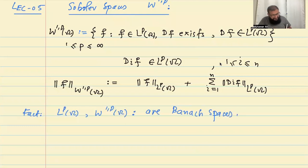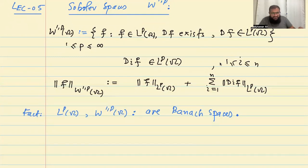These spaces — Lp and W1P — are Banach spaces. We can prove this claim easily using standard techniques from functional analysis. But since this is not the main focus of this course, our goal is to understand what we mean by Sobolev spaces and some of their properties.